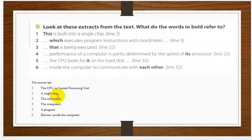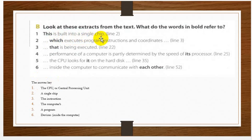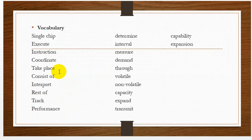Then we have another exercise. Look at these extracts from the text — what do the words in bold refer to? Words like: which, that, it's, each other, like this. We can see here the answer key. For example, 'this is built into a single chip' — you can see line number two — and here is the answer: the CPU, or central processing unit. Here is the answer key, and you can practice these exercises.